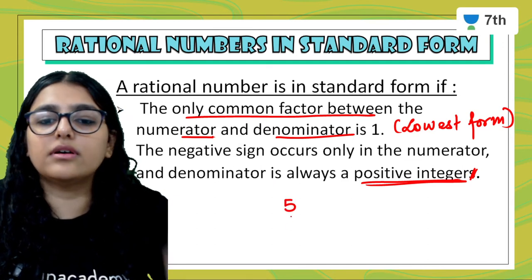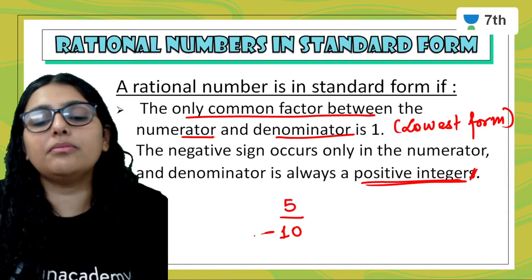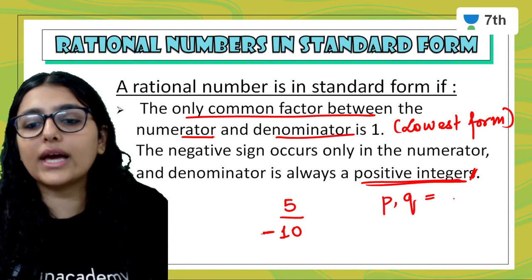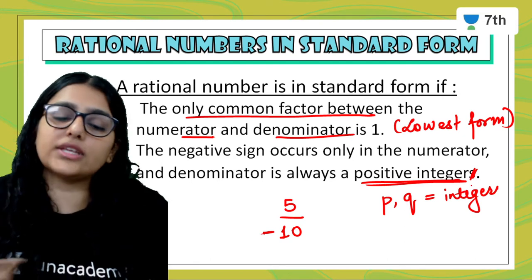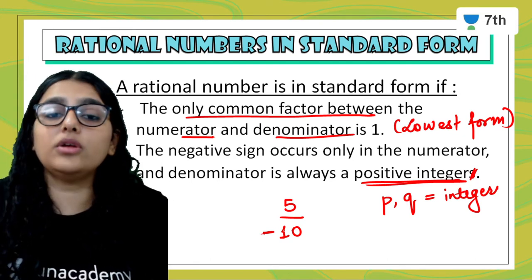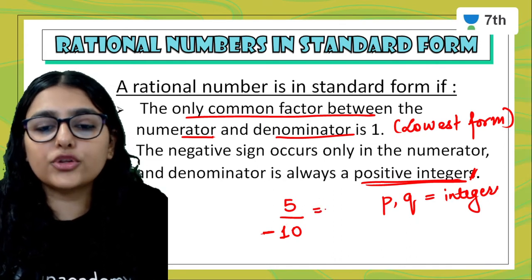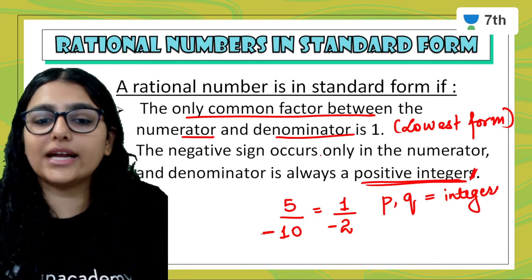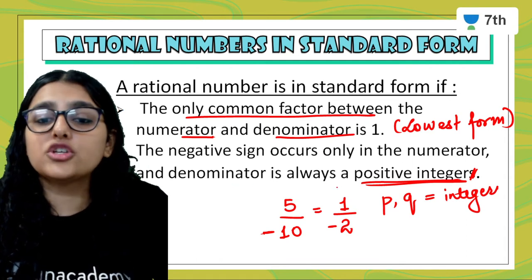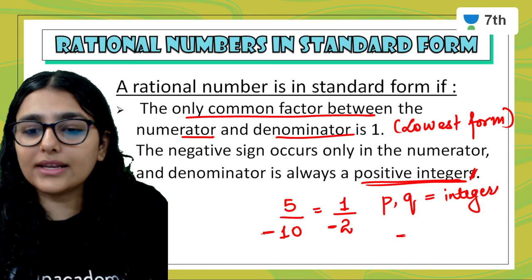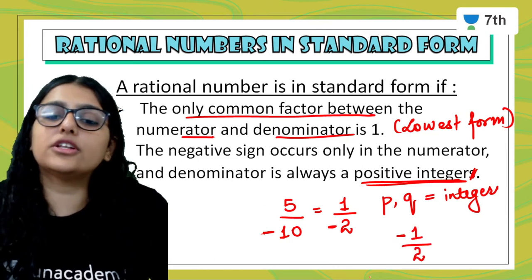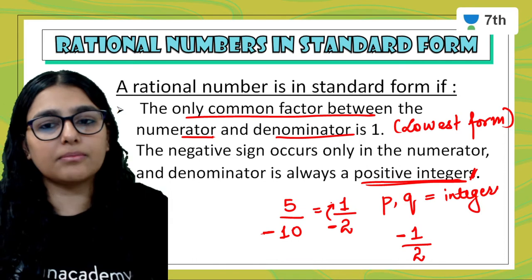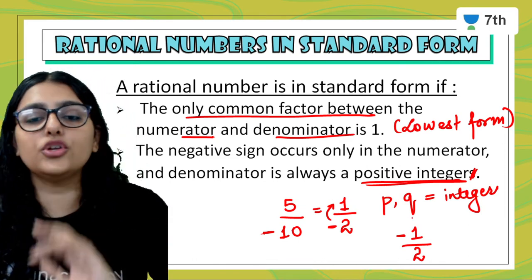For example, let's say 5 upon minus 10 is my rational number. In the denominator there is also a negative sign. P and Q are both integers, so Q can be negative too. Now if I take it in the lowest form: 5 over 10 simplifies since 13 divides as — actually 5 is common: 1 upon minus 2. The second condition of standard form is that the denominator is always positive. So I have the liberty to take the negative sign to the numerator. It will still remain a negative number.